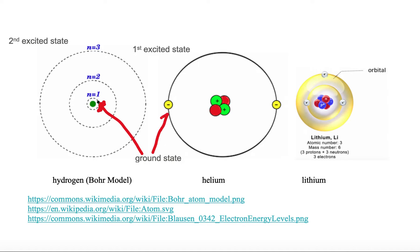Here's another ground state example. Helium has two protons in the nucleus, therefore there must be two electrons surrounding the nucleus. Here we put them in the lowest energy state, which is the ground state, on opposite sides to balance. Lithium has three protons in the nucleus, therefore there must be three electrons surrounding the nucleus. We fill the ground level first — you see two electrons in the ground state — and then we fill the next state up.